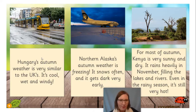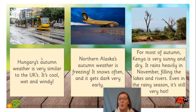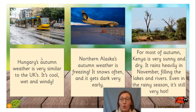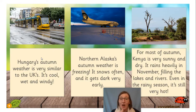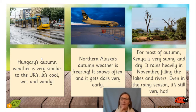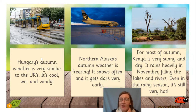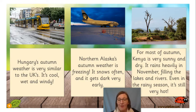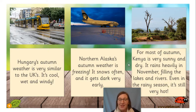So, Hungary in the autumn weather is very similar to the UK — it's cool, wet, and windy. However, northern Alaska's autumn weather is freezing; it snows very often, and it does get very dark early, like our winter. But in autumn in Kenya, it's very sunny and dry. It rains heavily in November, filling lakes and rivers, but even in the rainy season it's still very, very hot. So we saw very different weathers but in the same season.